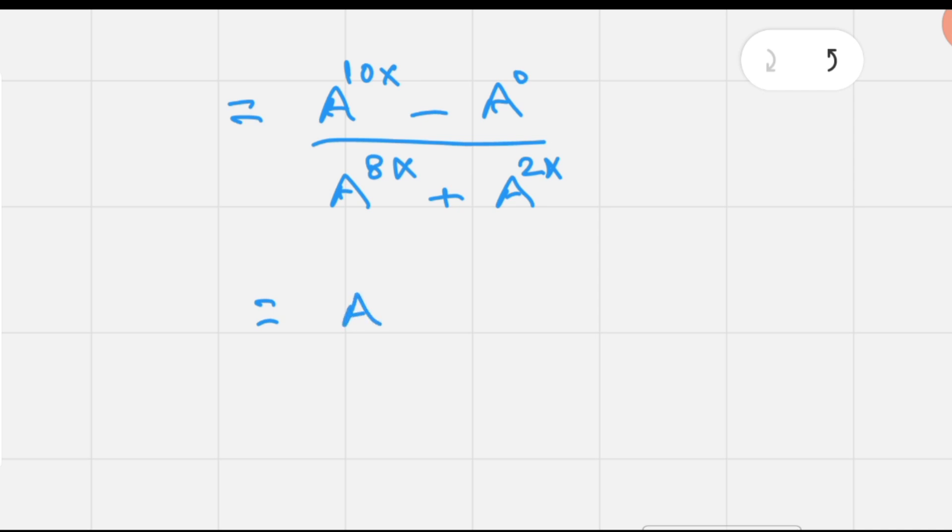So 10x can be converted into terms of A^(2x) whole raised to the power 5, and we know that any number to the exponent 0 is 1, so A^0 is 1. This gives us (A^(2x))^5 minus 1 over (A^(2x))^4 plus A^(2x).